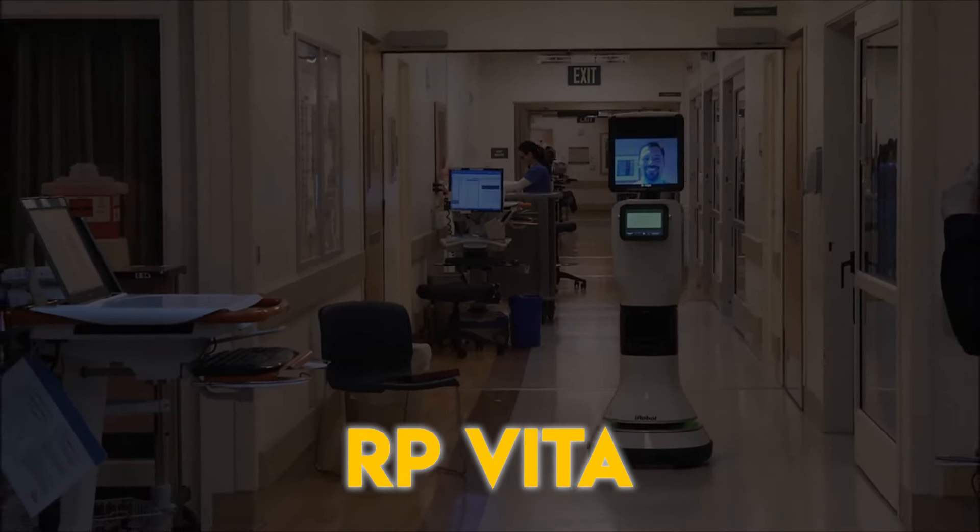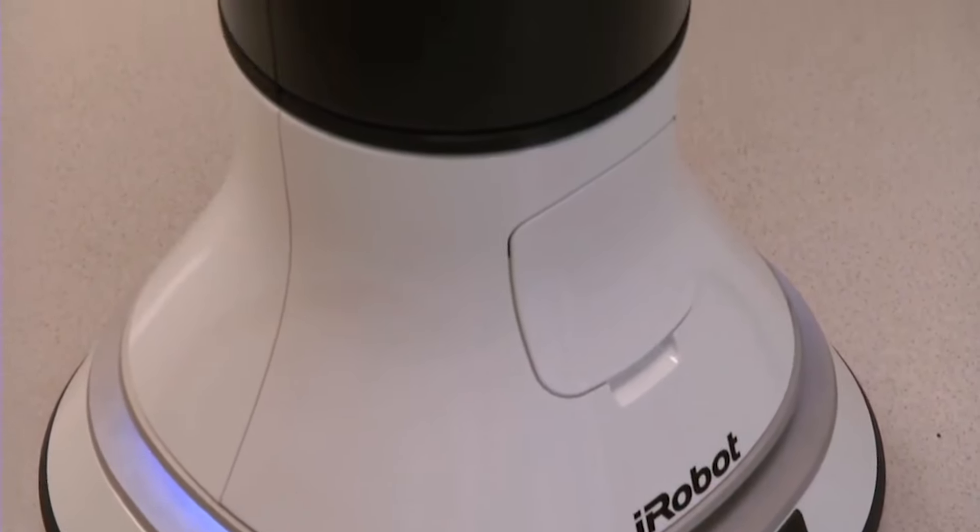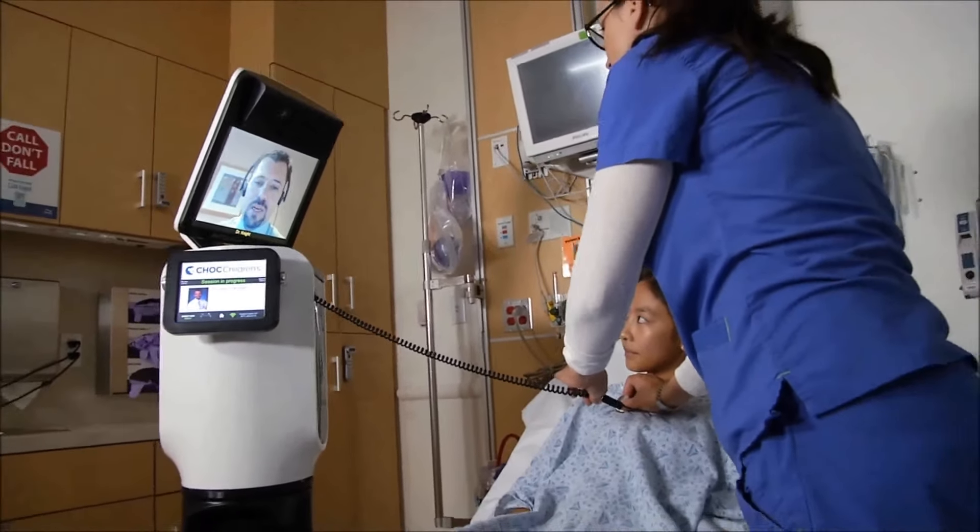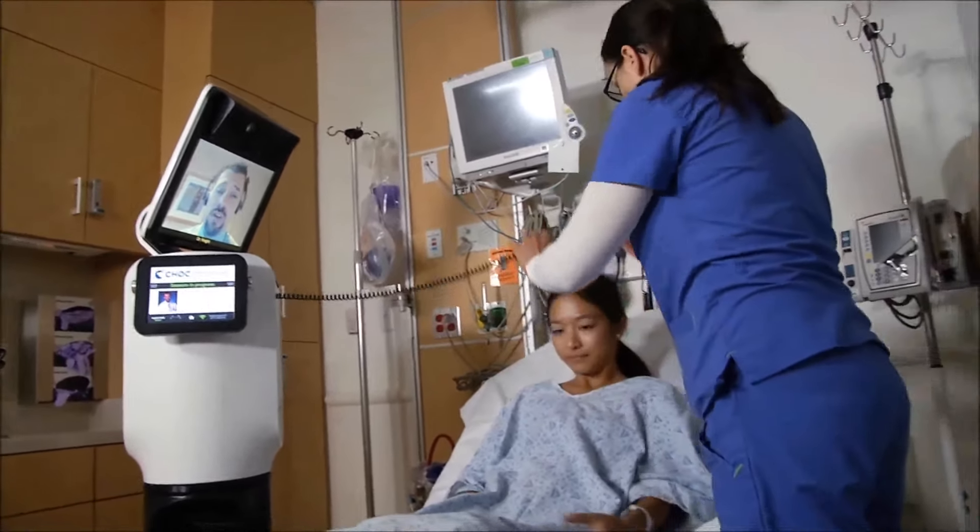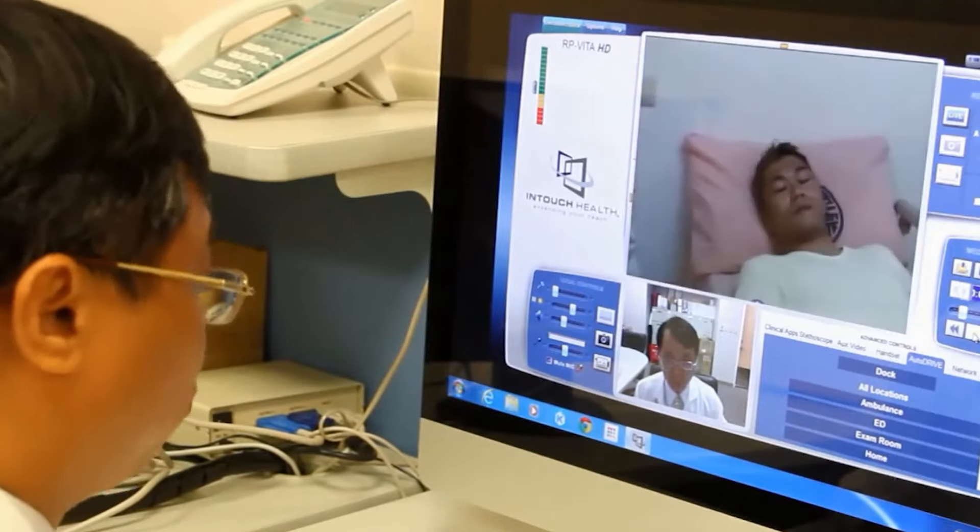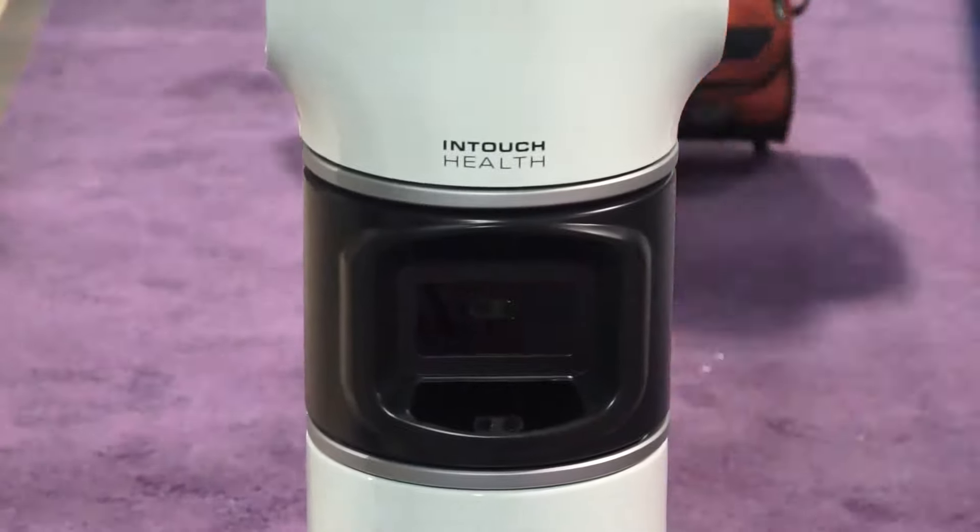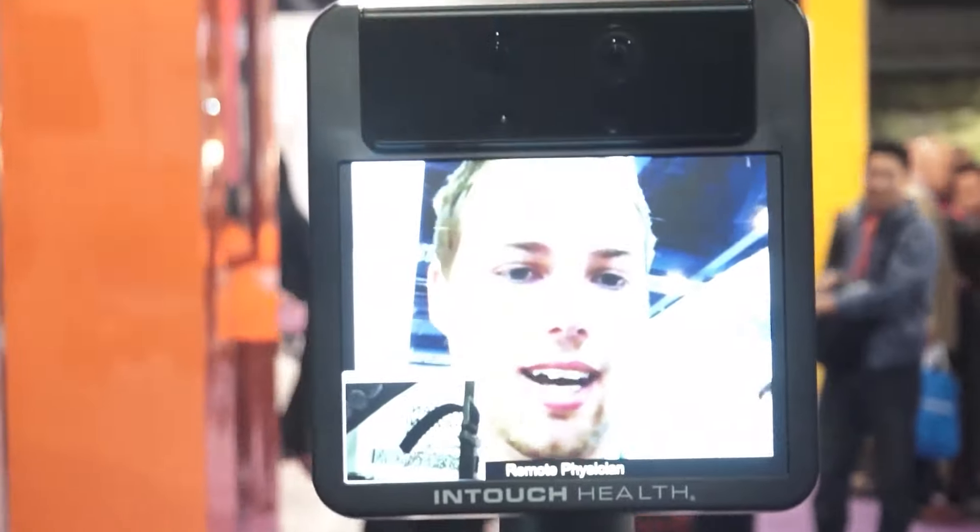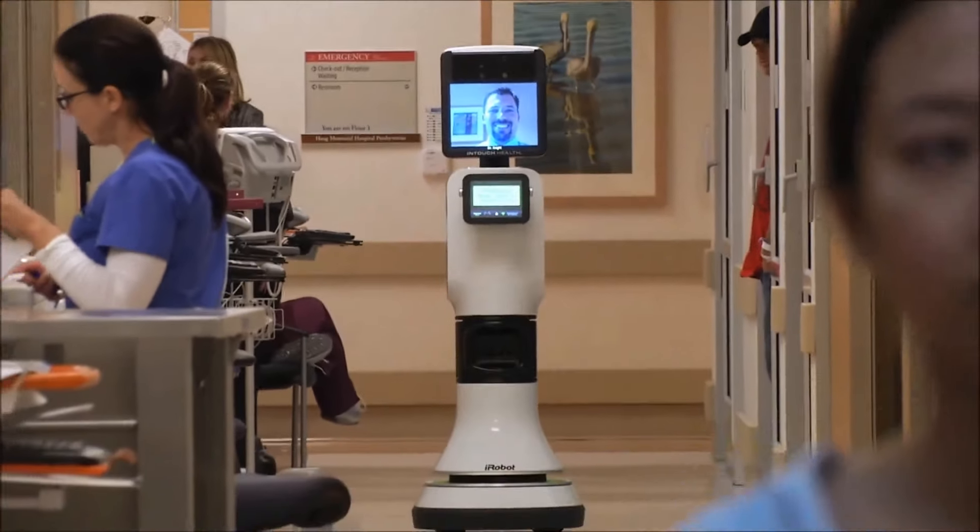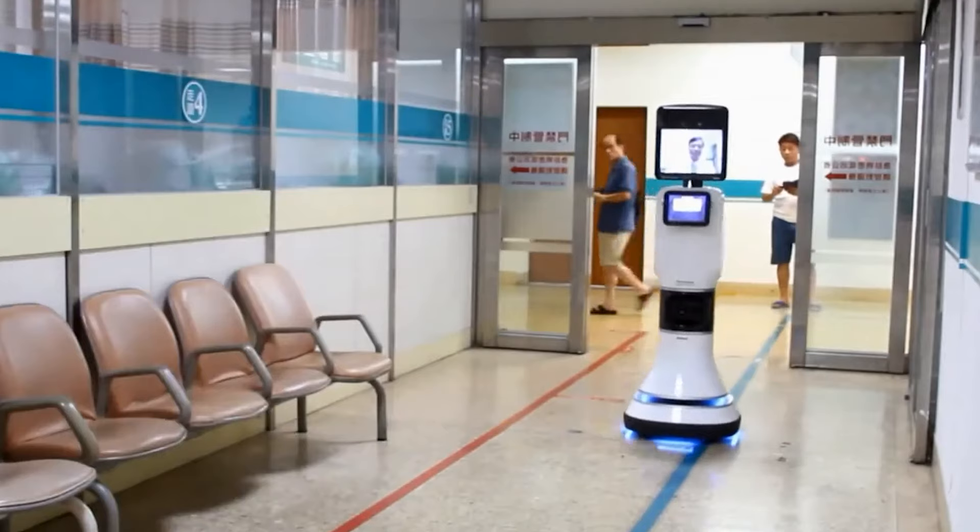Imagine a robot that acts like a virtual doctor, ready to help you no matter where you are. That's RP Vita, a special telemedicine robot created by iRobot Corporation and InTouch Health. RP Vita isn't just any robot, it has fancy cameras and a touchscreen that lets doctors see and talk to patients from far away. This means even if you're not near a hospital, you can still get good medical care. But RP Vita does more than just video calls. It can move around hospitals by itself so it can find patients quickly.